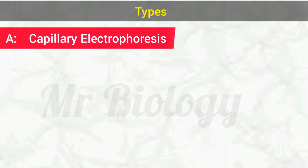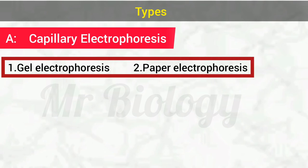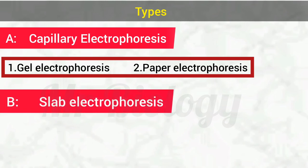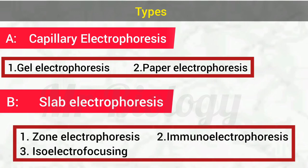Electrophoresis is classified into two main categories: capillary electrophoresis, which include gel electrophoresis and paper electrophoresis and slab electrophoresis. It is further subdivided into zone electrophoresis, immunoelectrophoresis and isoelectrophoresis.